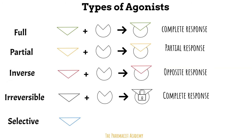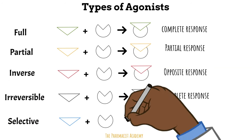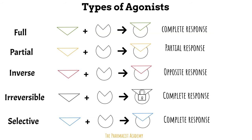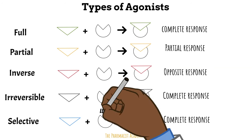Selective agonists are drugs that bind to the receptor and lead to a full, complete response, but do so on a specific receptor. One receptor can be present in different parts of the body. For example, the drug may interact with receptor A specifically in the lungs and not in the kidneys or the heart.